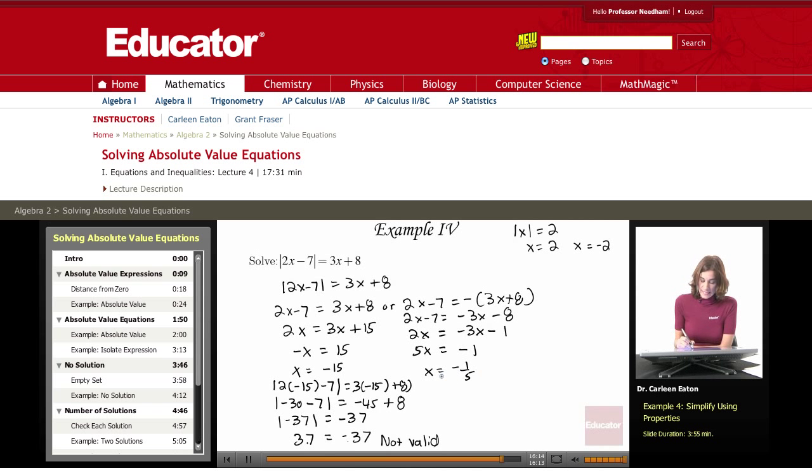Let's try this one. x equals negative 1 fifth. Substituting it in here. 2 times negative 1 fifth minus 7 equals 3 times negative 1 fifth plus 8. So that's going to give me negative 2 fifths minus 7. Absolute value equals negative 3 fifths plus 8.